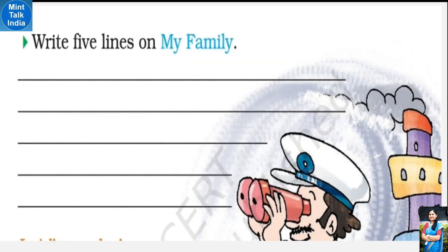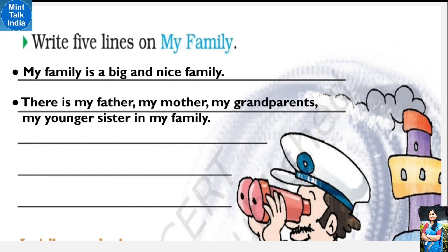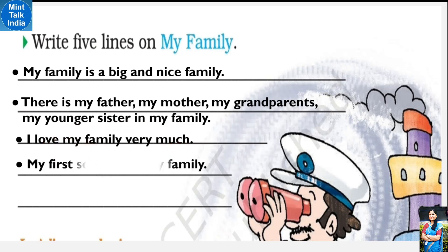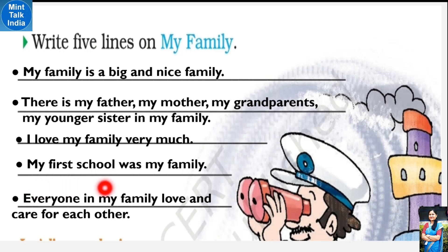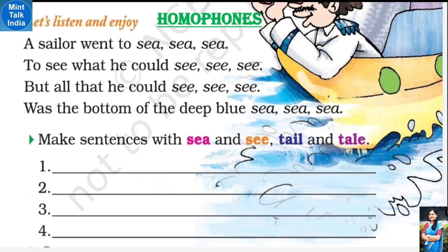Next we have to write five lines on my family - mere parivaar ke baare mein paanch lines, creative writing. First line: My family is a big and nice family. There is my father, my mother, my grandparents, my younger sister in my family. I love my family very much. My first school was my family - kyunki humne parivaar se hi sabse pehle sab cheezein seekhin - bolna seekha, khana seekha, good manners seekhe. Everyone in my family love and care for each other.